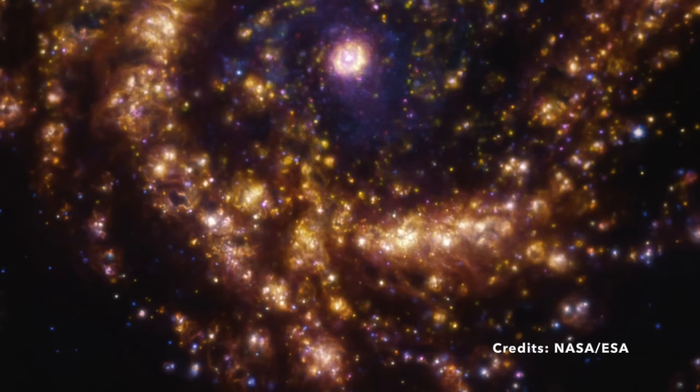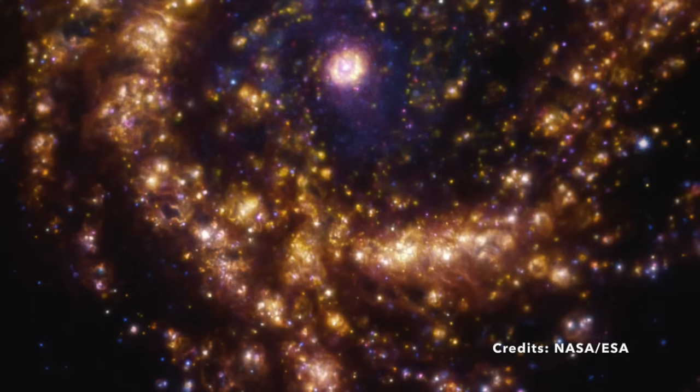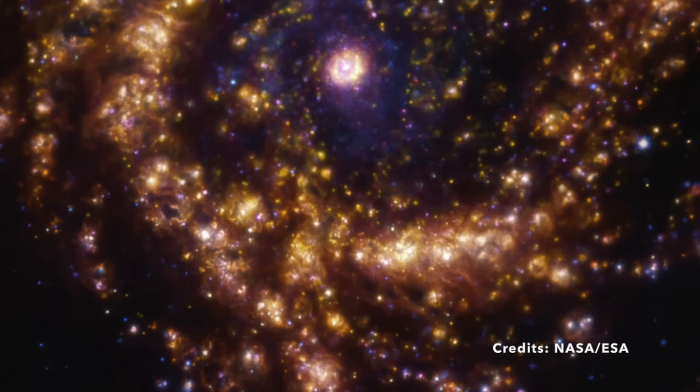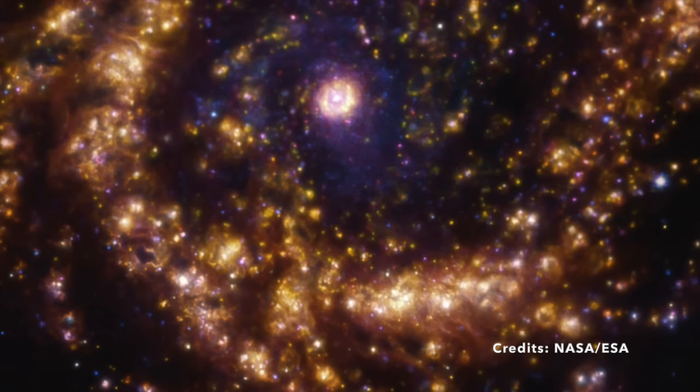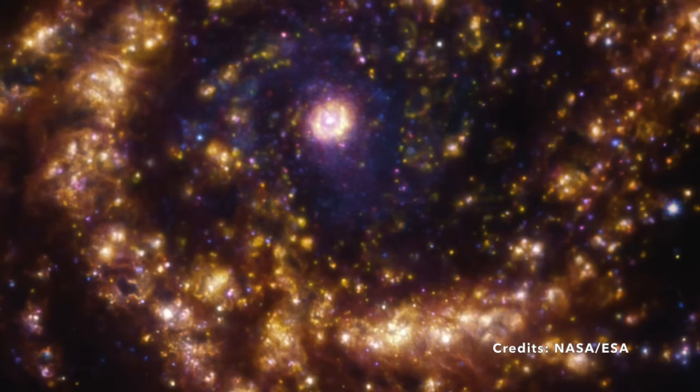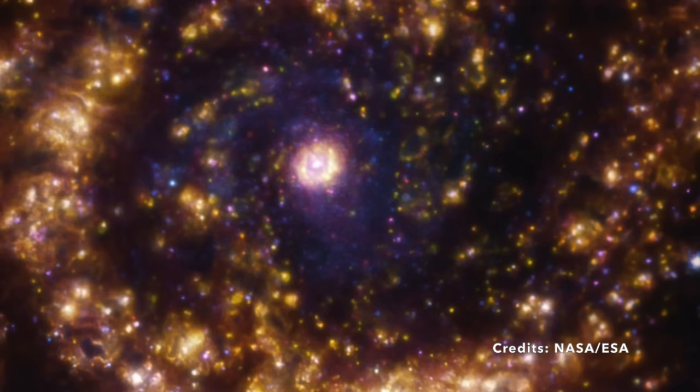Have you ever pondered where stars come from? How do these luminous celestial objects ignite in the vast expanse of space? Well, Messier 61 offers an intriguing window into this cosmic wonder. Known as a starburst galaxy, it's like a bustling maternity ward for stars. Here, stars are born at a rate that is considered unusually high in the grand scheme of galactic events.